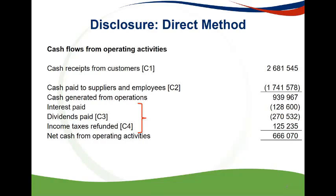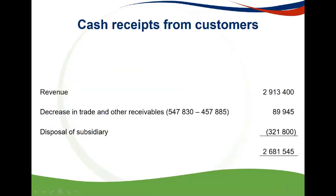Usually, interest and dividends received and paid as well as tax paid would be disclosed under operating activities; however, the information specifically indicated that interest and dividends received should be disclosed under investing activities. The direct method requires that cash generated from operations be arrived at by calculating cash received from customers and cash paid to suppliers and employees. This figure should be calculated by taking into account revenue and changes in trade receivables. The trade receivables for the subsidiary disposed, Cabinet Limited, should also be removed to identify actual debtor cash inflows during the year.